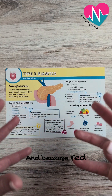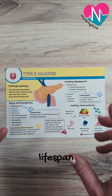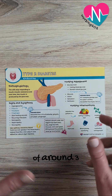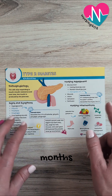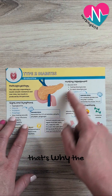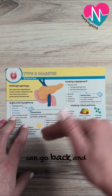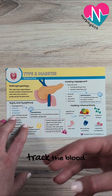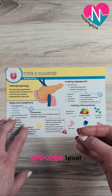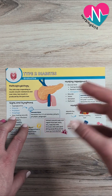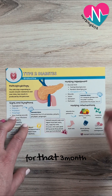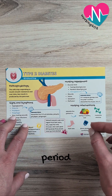Because red blood cells have a lifespan of around three months, that's why the HbA1c can go back and track the blood glucose level for that three-month period.